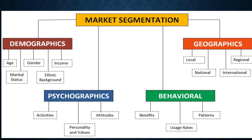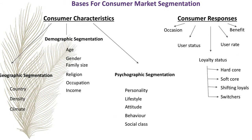Coming to geographic segmentation. We can divide the market on the basis of areas — local markets, national market, international market, and regional market. There can be different criteria for marketing segmentation. On the basis of consumer characteristics, we can divide on demographic, psychographic, and geographic segmentation. On the basis of customer response, we can divide the market by user status, user rate, benefit, and occasion.